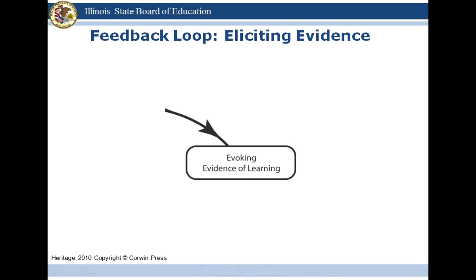Use multiple sources of evidence — triangulation. What is most important when eliciting evidence is that the success criteria, the goal, and the evidence are aligned. The formative assessment strategy must be aligned and linked to the success criteria.